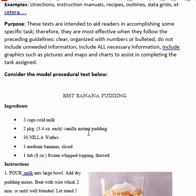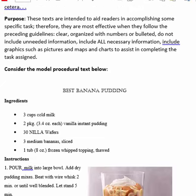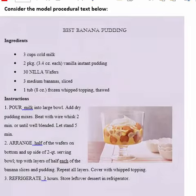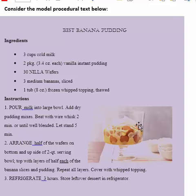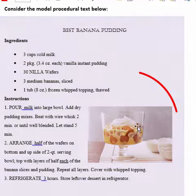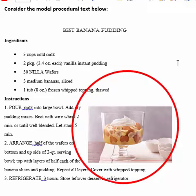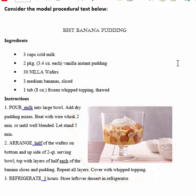And here's the model procedural text. If you look at this procedural text, you'll see that the graphic here is not really helping you complete the task — it's more showing you what the finished product looks like. Text graphics that would help you complete the task might be pictures of how it looks when you're mixing each stage, or how it looks when you're spreading out the wafers inside of the dish.